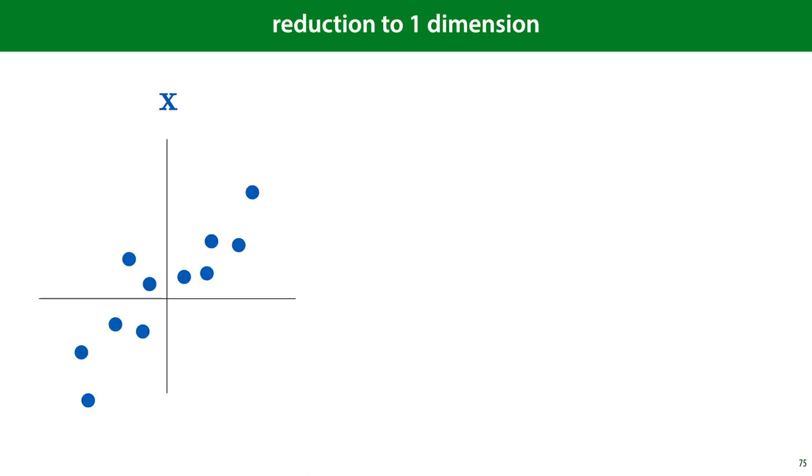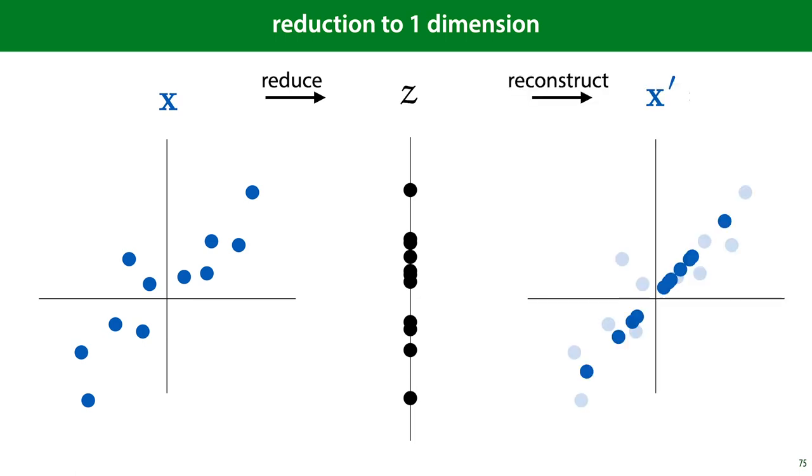So let's look at how this principal component analysis works. To simplify our explanation, we'll start by reducing our data to just one dimension. For each instance, we'll try to come up with a single number z that hopefully represents it pretty well. The way we'll do this is by optimizing the reconstruction error. We'll come up with some function that reconstructs our data from the reduced point z, and the closer this reconstruction is to the original point, the better.